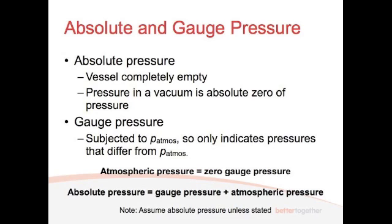So atmospheric pressure is zero gauge pressure. That's what I've said before. And then absolute pressure is the gauge pressure plus the atmospheric pressure. And so zero absolute pressure means we've got a very large negative gauge pressure that cancels out the atmospheric pressure.